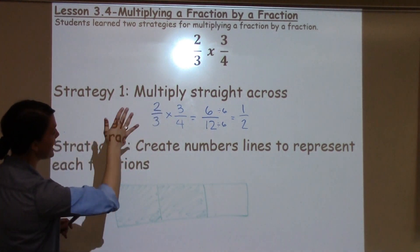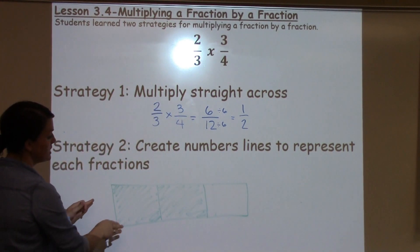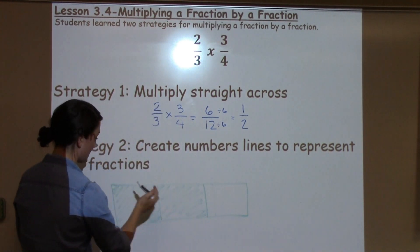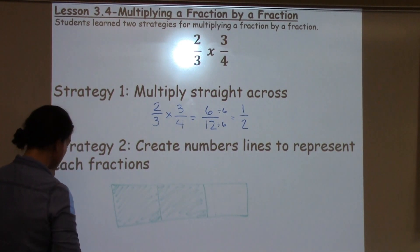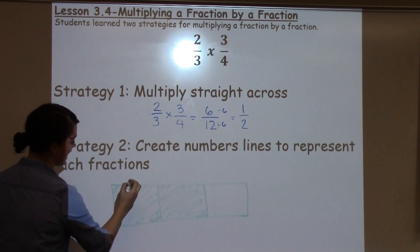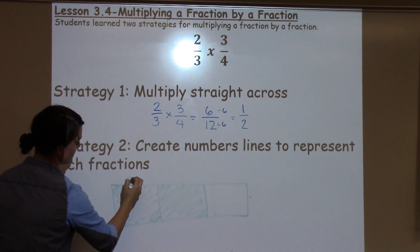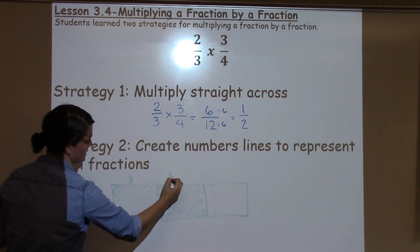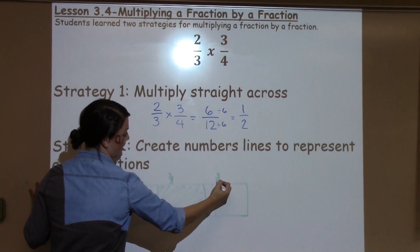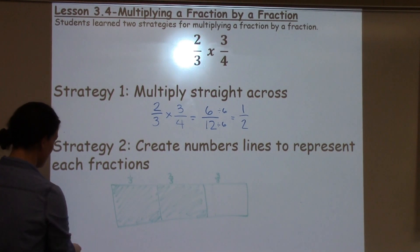Now, on top of that same picture, I'm going to draw 3 fourths. So, 2 thirds was going vertically. 3 fourths is going to go horizontally. Before I move on, I'll show you. This is 1 third, 2 thirds, 3 thirds, going down.